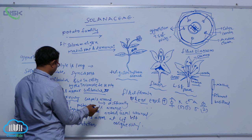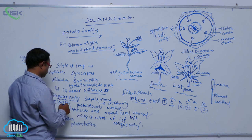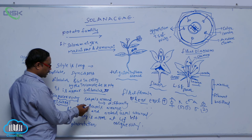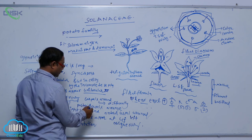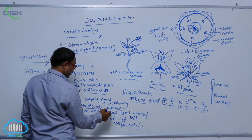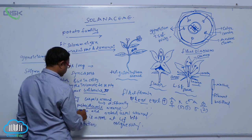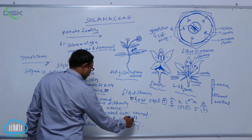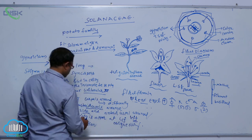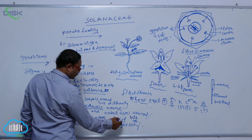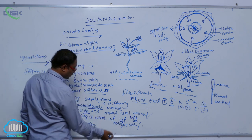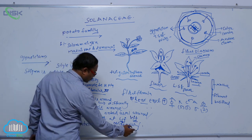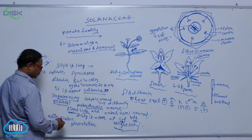The carpels are arranged differently — bilocular generally. The posterior carpel is arranged on the right side and the anterior carpel is arranged on the left side. That is why the ovaries appear at 45 degrees, and this is known as an oblique ovary.